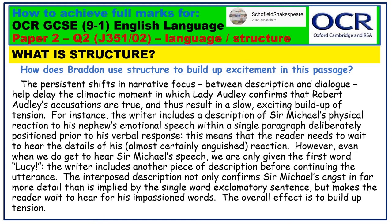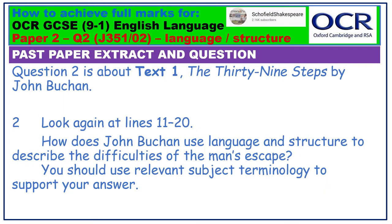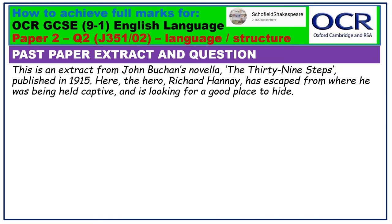So hopefully that gives you an idea about what is required. But remember, paper 2, question 2, will ask you to talk about language and structure. So let's look at an actual past paper extract and question. Question 2 is about text 1, The 39 Steps, by John Buchan. Look again at lines 11 to 20. How does John Buchan use language and structure to describe the difficulties of the man's escape? You should use relevant subject terminology to support your answer.